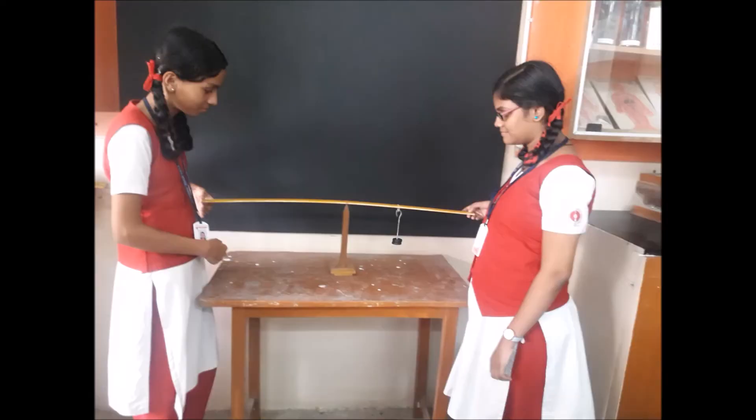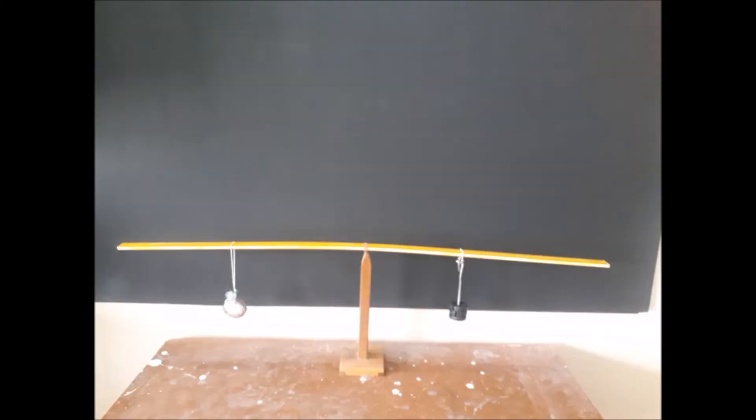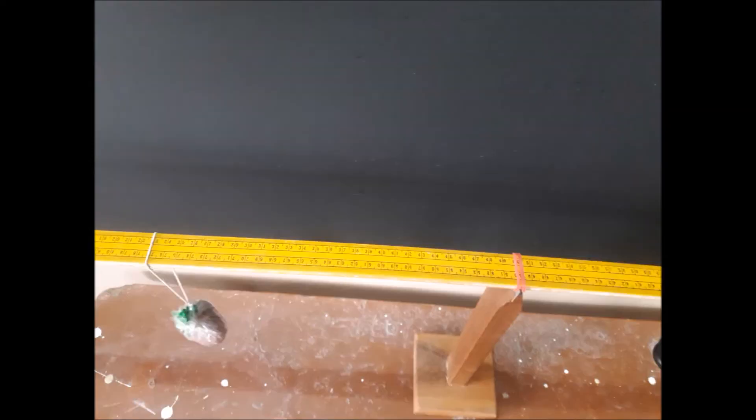A known weight W2 and an unknown weight W1 are suspended from either side of the scale. Fix the position of the known weight and adjust the position of the unknown weight such that the scale is in equilibrium.